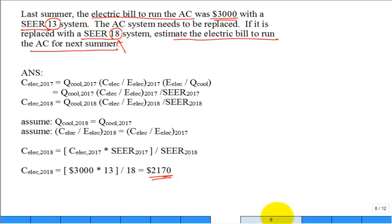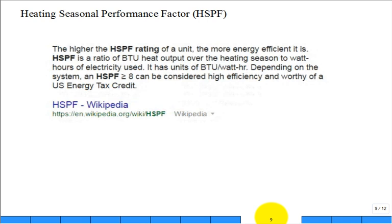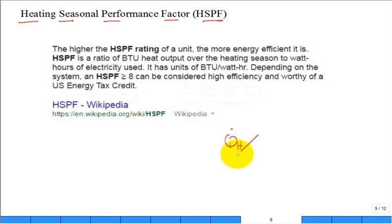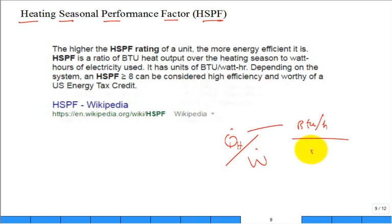This type of simple payback analysis is something you'll be asked a lot after you get your degree. Not only do we struggle through summer, but in the northern US they have more winter — sometimes nine months of winter. For heating, there's the Heating Seasonal Performance Factor, HSPF. It has the same units: BTU per hour divided by watts. It applies to heat pumps providing heat to the dwelling.